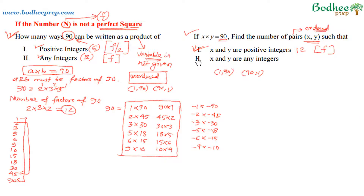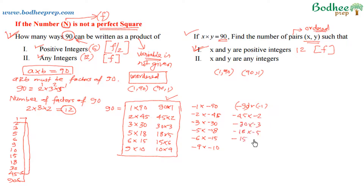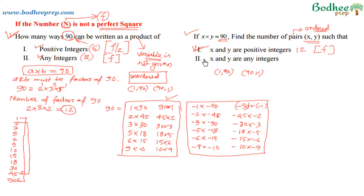Now for the last part: x and y are any integers. All 12 positive ordered pairs are part of the solution, plus the corresponding negative ordered pairs. For example, −1 × −90 is also a solution, −45 × −2, −15 × −6, and so on through −10 × −9. So 12 positive ordered pairs plus 12 negative ordered pairs gives a total of 24. The shortcut formula for this case is 2 times the number of factors of n.